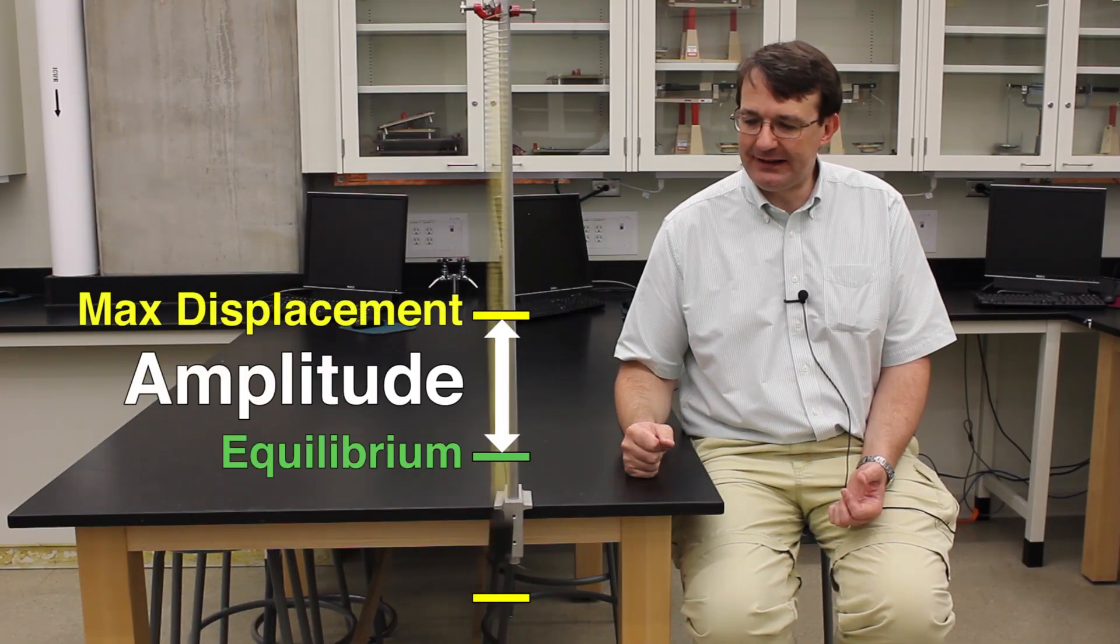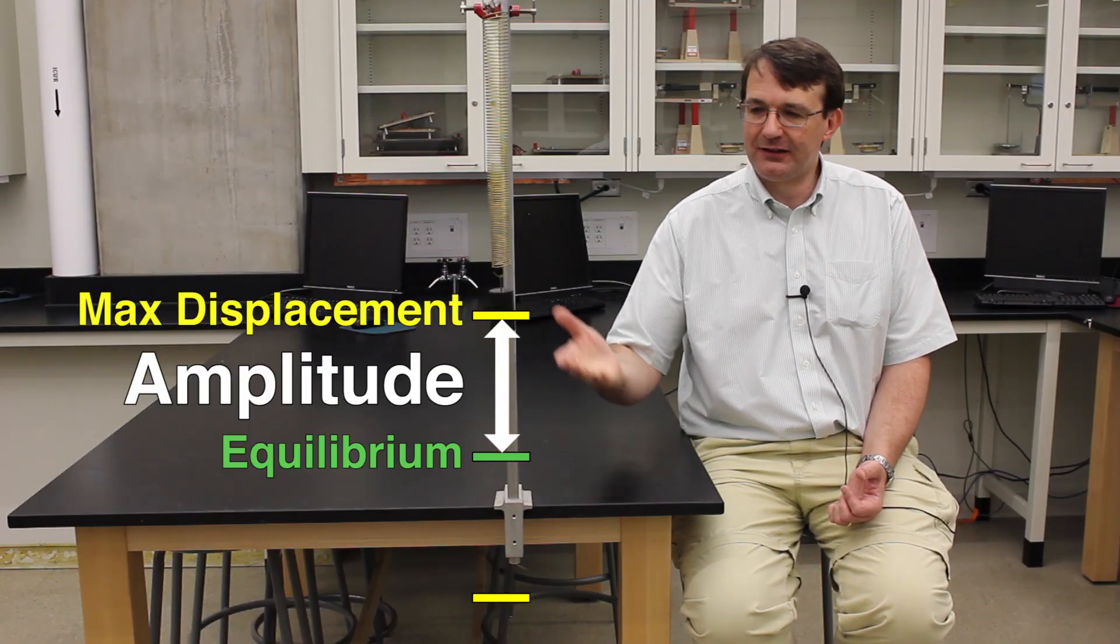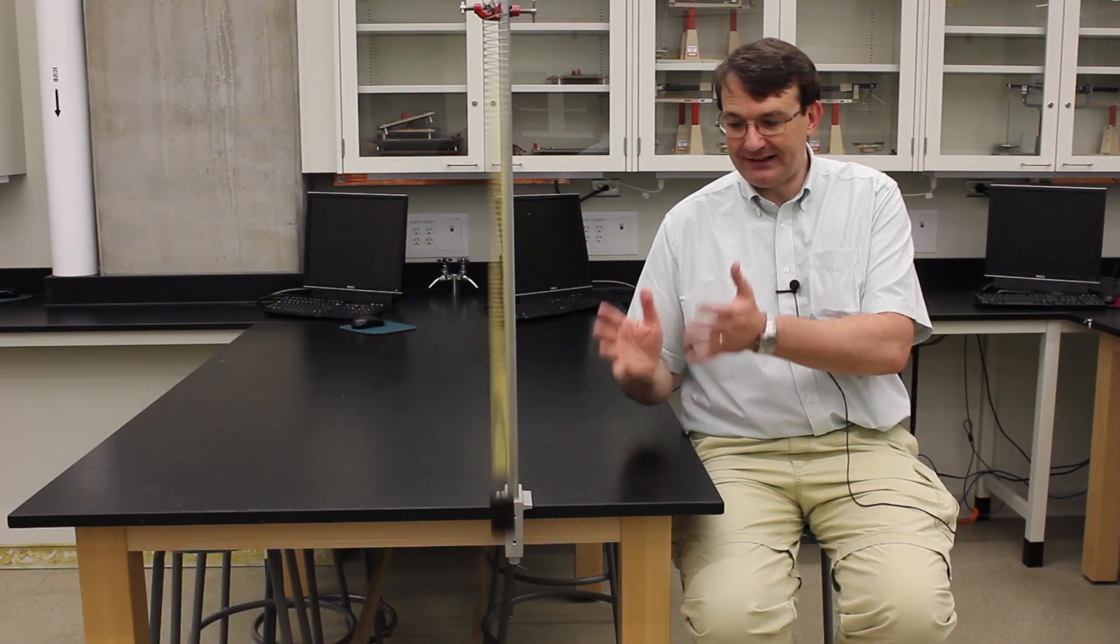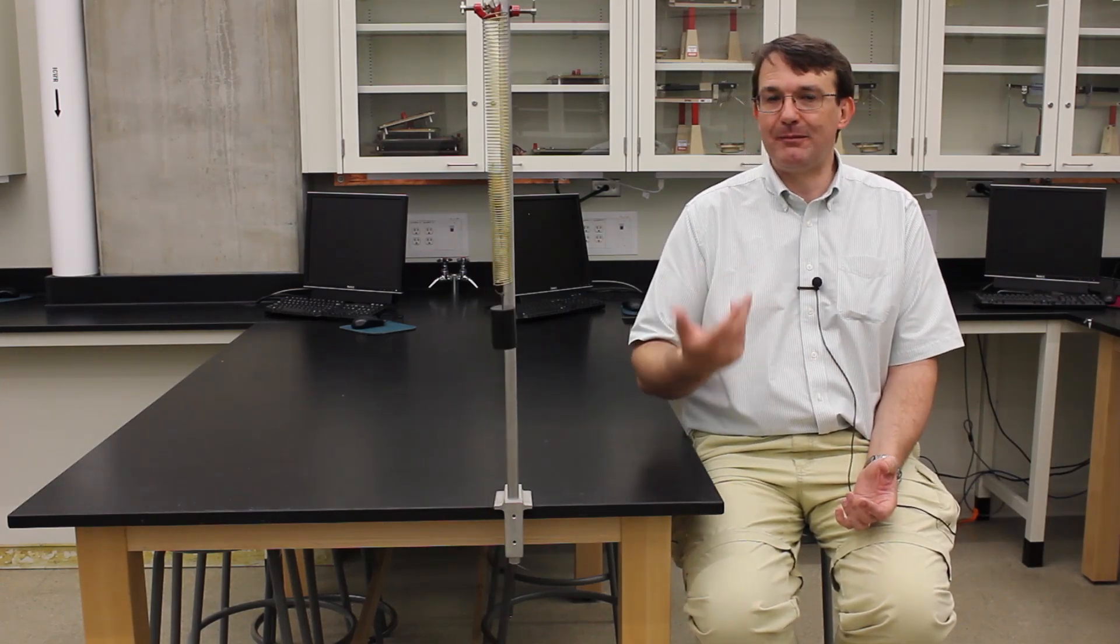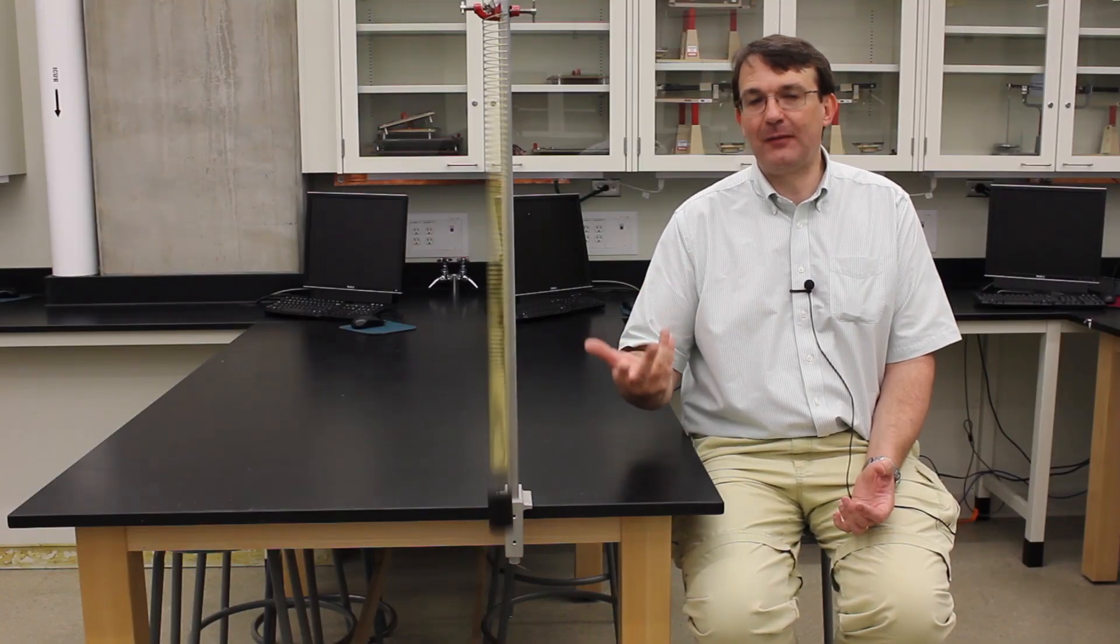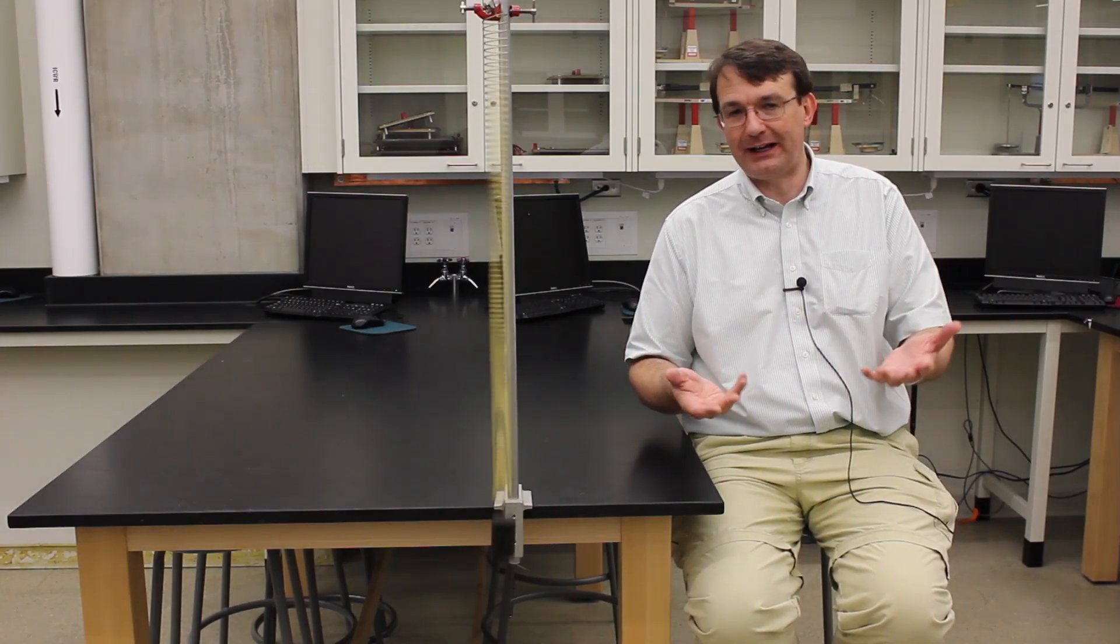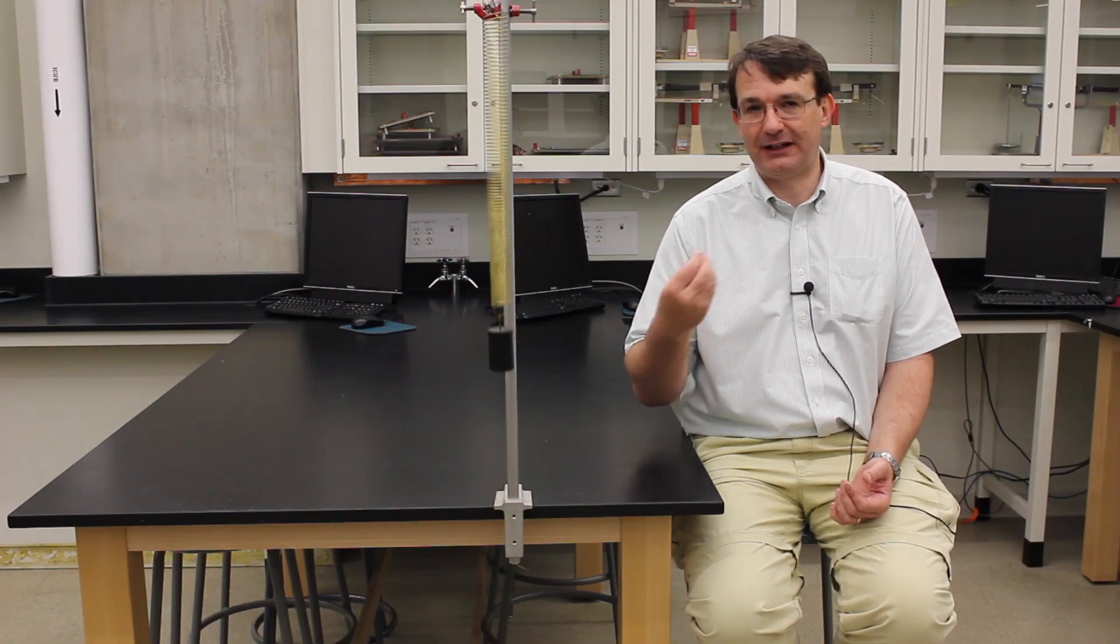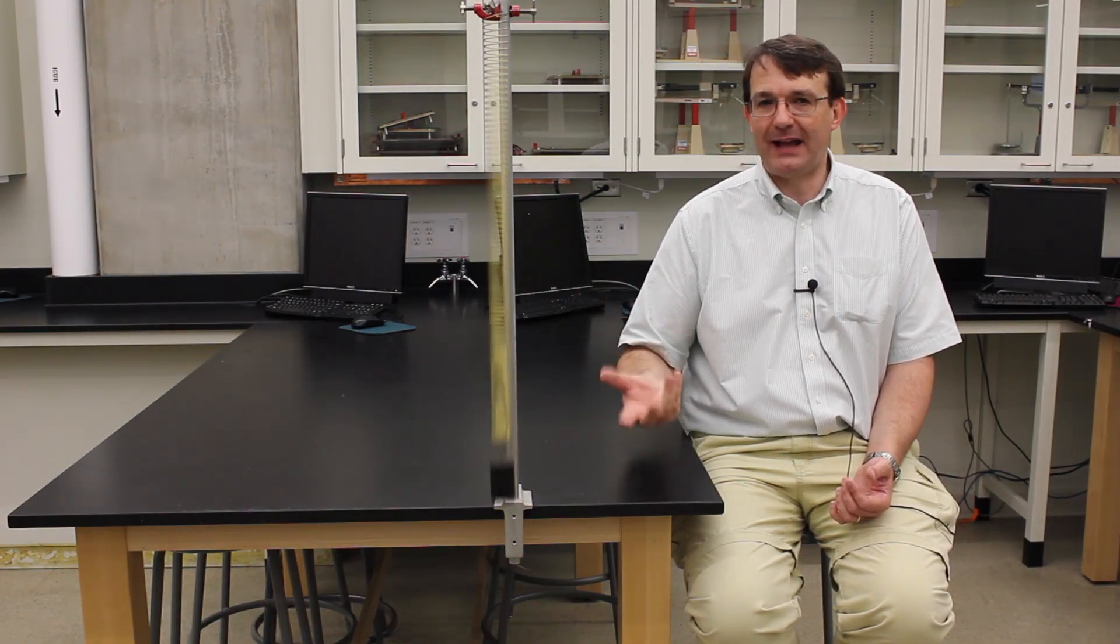For a mechanical system like this, the amplitude is the maximum displacement of the mass from the equilibrium position. So for this system, it's a distance, and we measure it in meters. However, that's not the case for all mechanical oscillators. If you think of a simple pendulum, the maximum displacement there will be an angle measured in radians or degrees. Another example is an electromagnetic wave, where you have an electric or magnetic field that's oscillating, and the amplitude will be given in units of field strength. So the units for amplitude depend on the system that is oscillating.